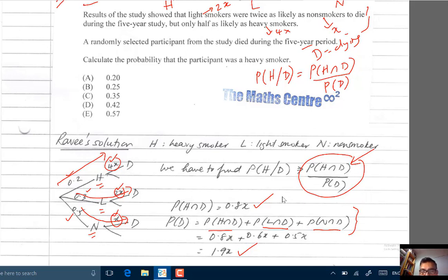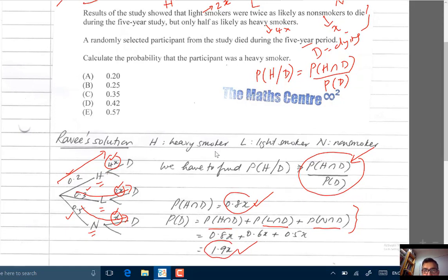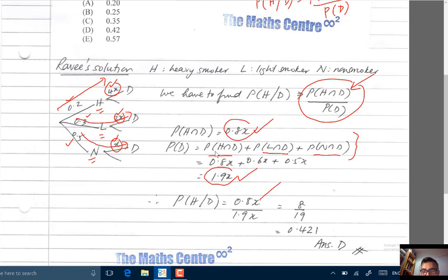So the numerator is 0.8X, the denominator is 1.9X. Put one over the other, 0.8X over 1.9X. You will get 8 over 19. Use a calculator and you will get 0.421. Correct response, D.